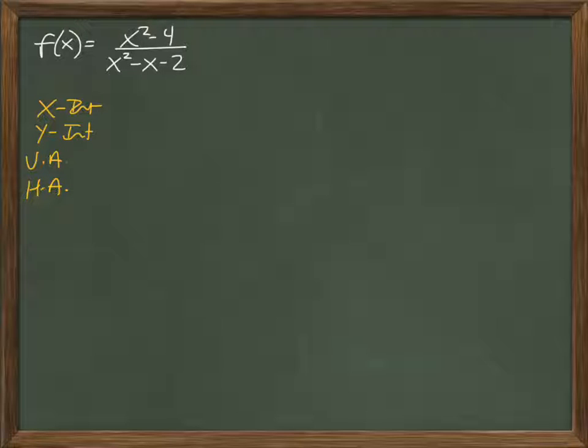If we go through each one, for x-intercepts plug in 0 for y. Really I would just solve for the top, so it's x squared minus 4. If you solve, you might get plus or minus 2.